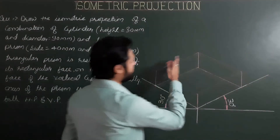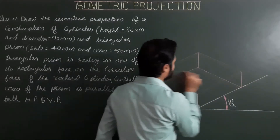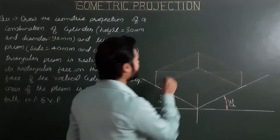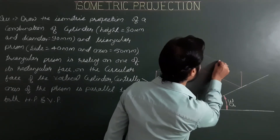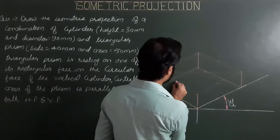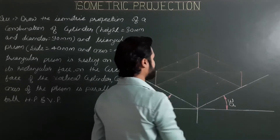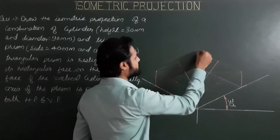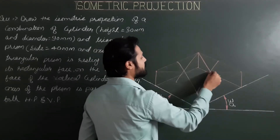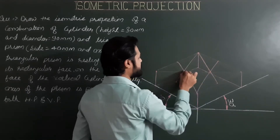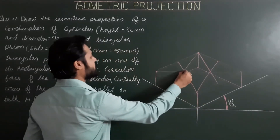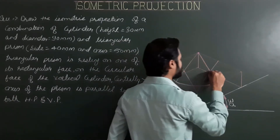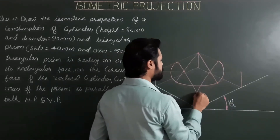On the upper face — the upper square — we have to project the circle using the four-center method. First step: join the diagonally opposite corners. Next, mark all four mid-points of the square. Then draw lines from each corner to the opposite mid-point. This gives us the first center, second center, third center, and fourth center. Now from the first center draw the first radius, from the second center the second radius, from the third center the third radius, and from the fourth center the fourth radius.